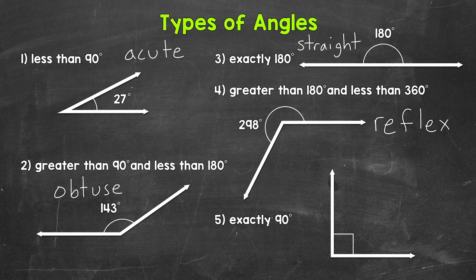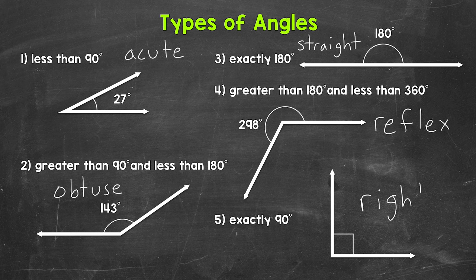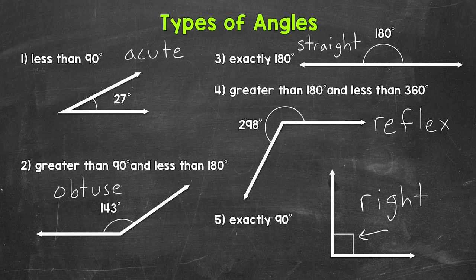And then lastly, we have an angle that is exactly 90 degrees. This is called a right angle. Now this square right here tells us that we have a 90 degree angle.